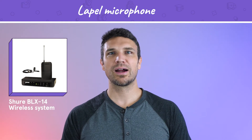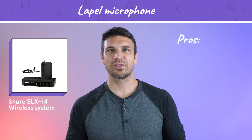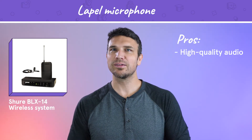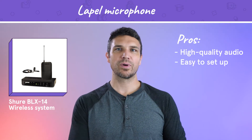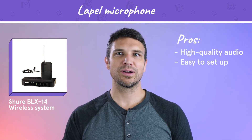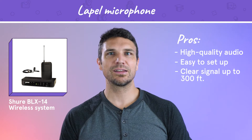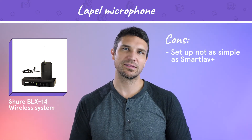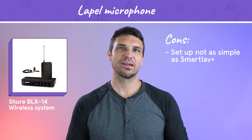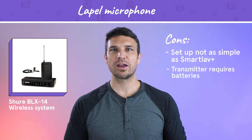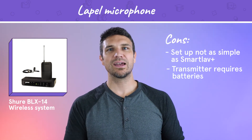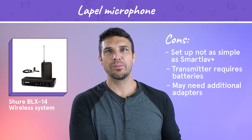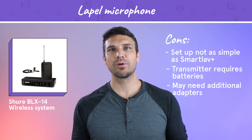On the higher end is the Shure BLX14 wireless system. This microphone delivers high quality audio and is relatively easy to set up and use right out of the box. The signal between the transmitter and receiver is clean and clear from up to 300 feet away. The setup is a bit more complicated than the Smart Lab Plus, and the transmitter pack requires batteries. You also need to get additional adapters or equipment in order to send the audio to your camera or computer.